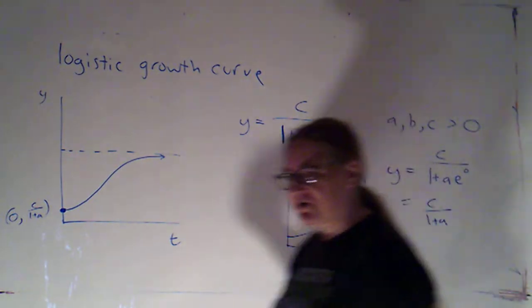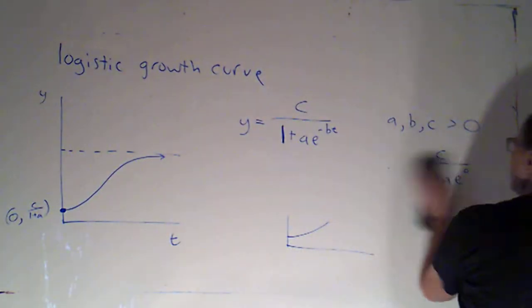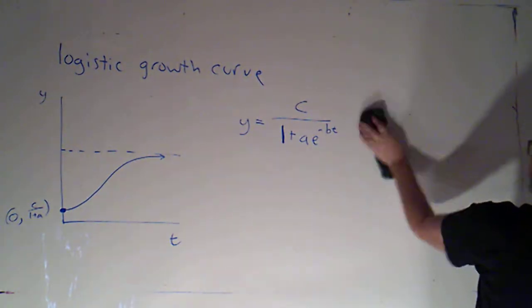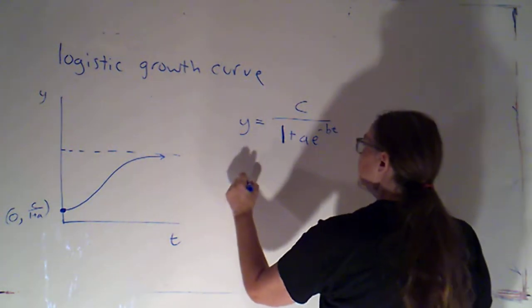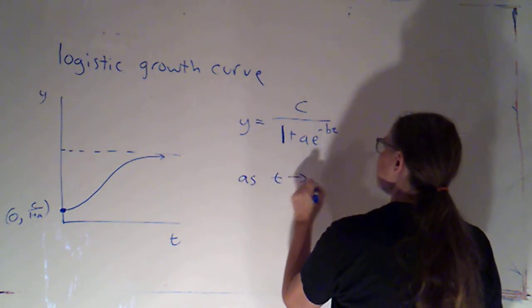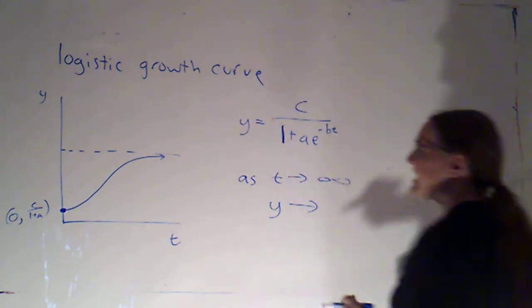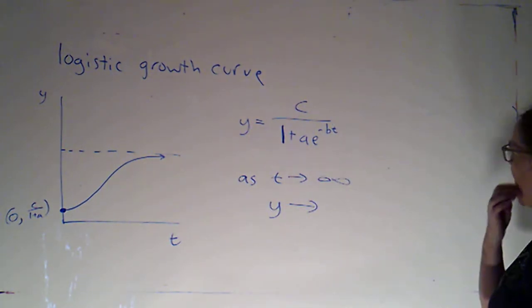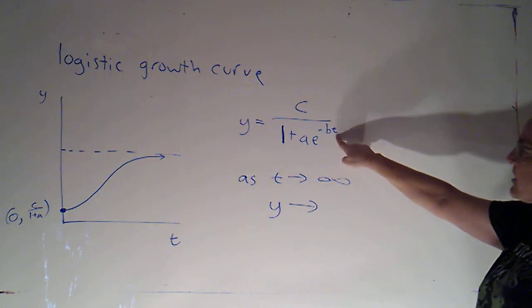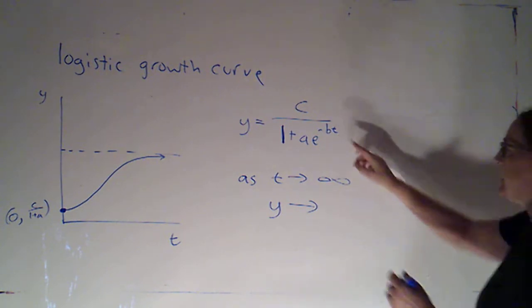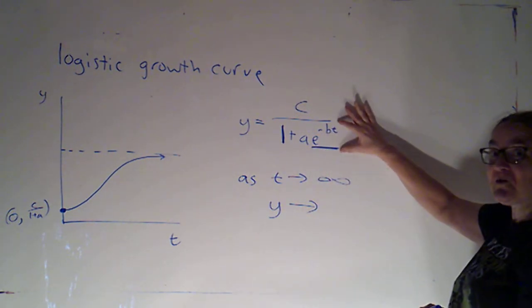But now I'm kind of curious about this asymptote. Can we figure that out? That's the sort of thing you do a lot in calculus because it's describing the end behavior. So I know this would be describing what happens as t goes to infinity. What's y going to? Now if I look at this formula, if t is going to infinity, this exponential piece right here is going to go to 0.